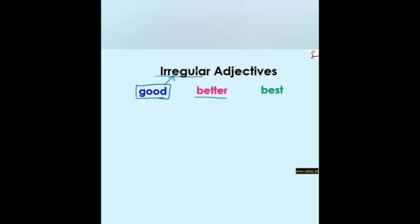Good is an irregular adjective — it doesn't have any rule. Now let's look at a regular adjective. We have 'tall.' Tall is a short adjective and it's regular, not irregular. The comparative of 'tall' is 'taller,' and the superlative is 'tallest.'